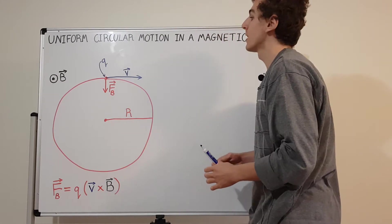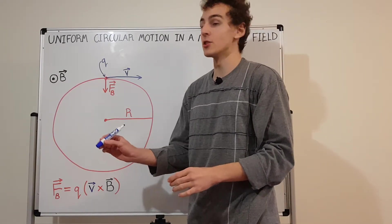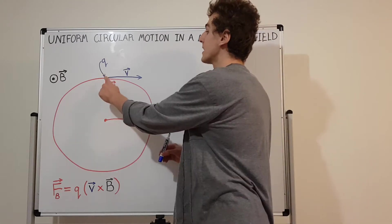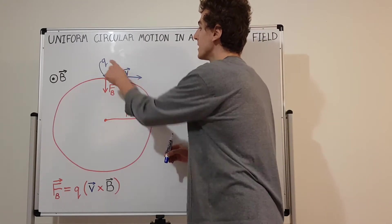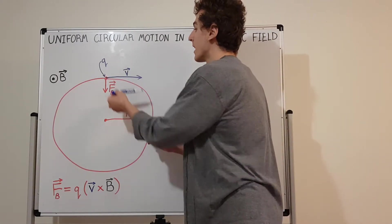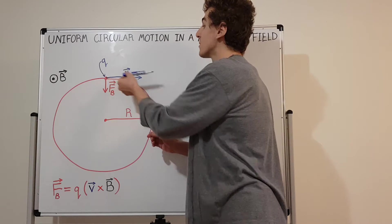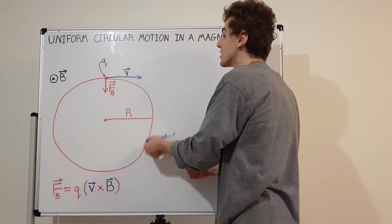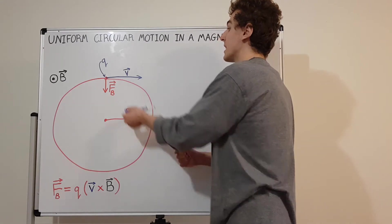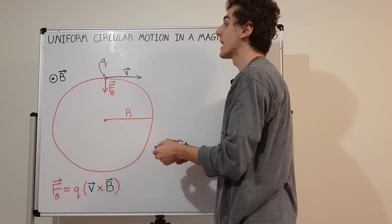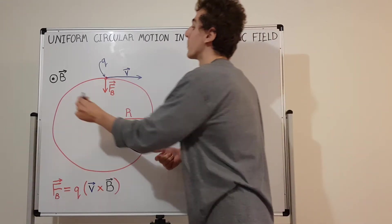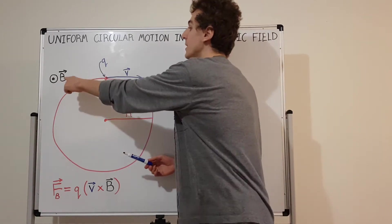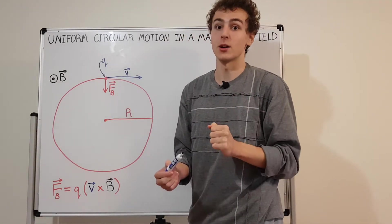Then we have a velocity vector associated with a little charge Q. This charge Q is moving as dictated by the velocity vector, and that velocity vector is in the surface of the whiteboard. Because it's in the surface of the whiteboard, it has to be perpendicular to the magnetic field. So V and B are perpendicular in this scenario.